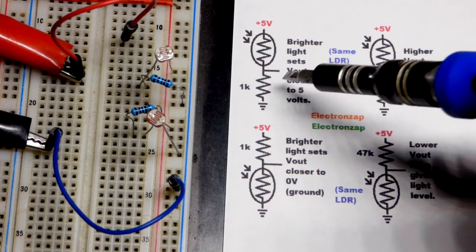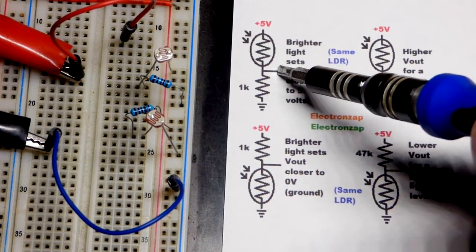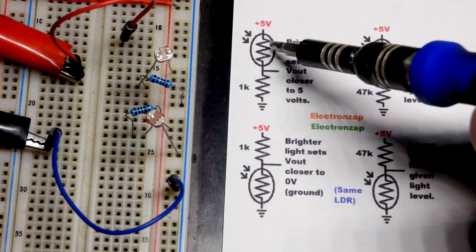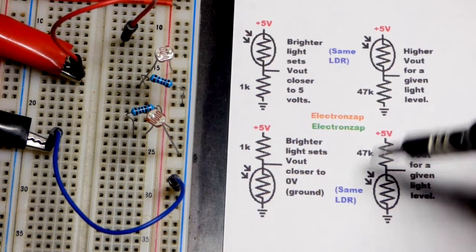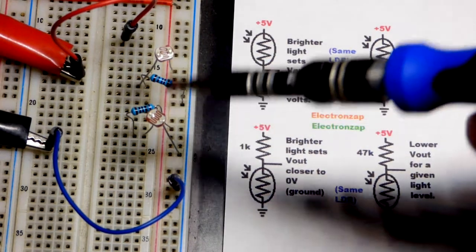Now in this video we're going to take a quick look at making a voltage divider that is light dependent, and we're going to do that by using light dependent resistors and it's going to be the same light dependent resistor in all these.